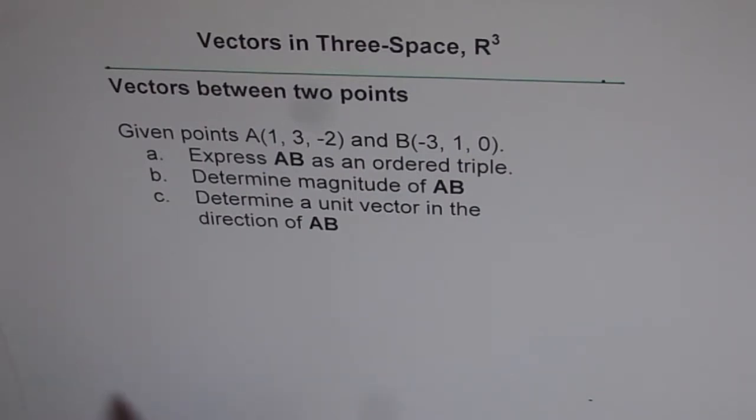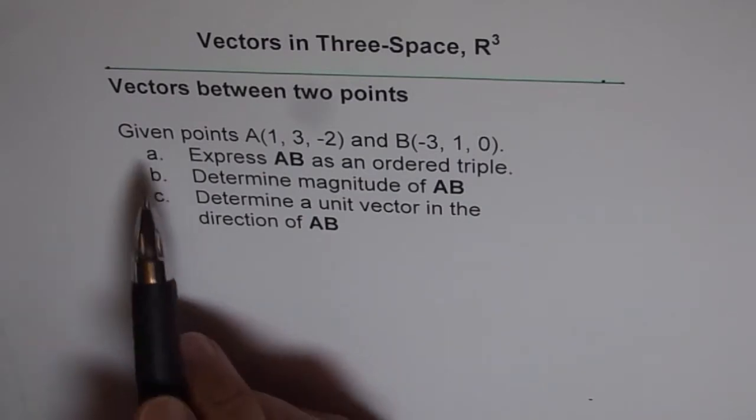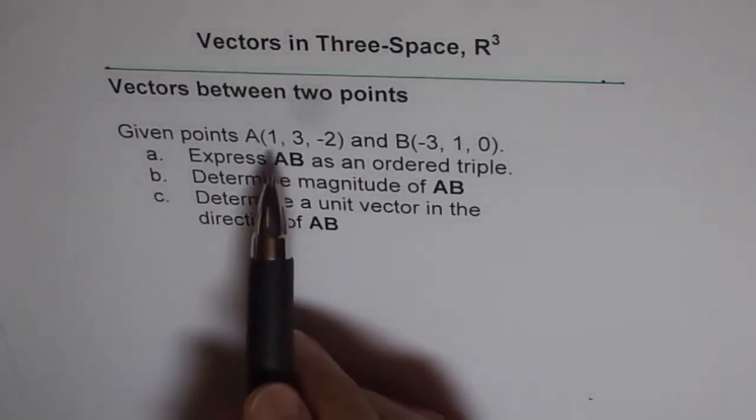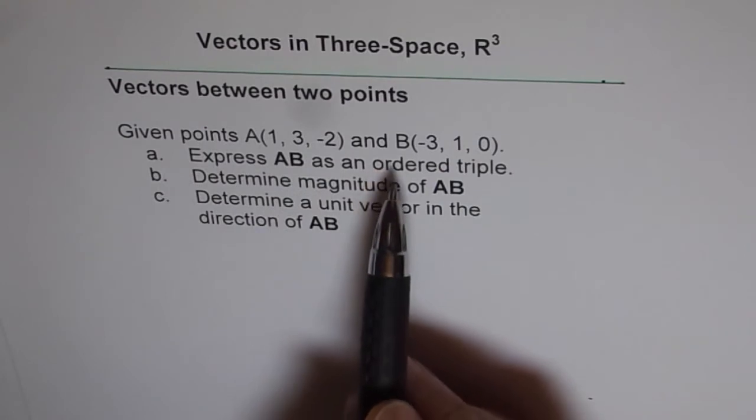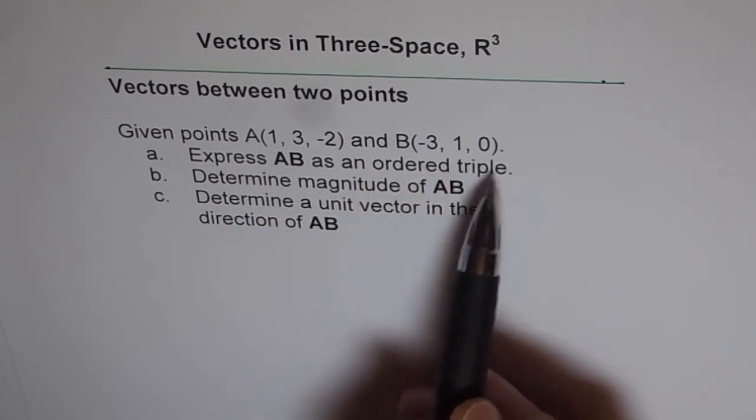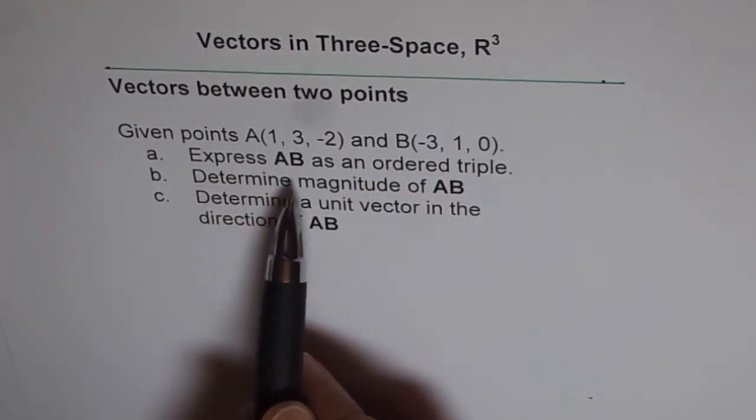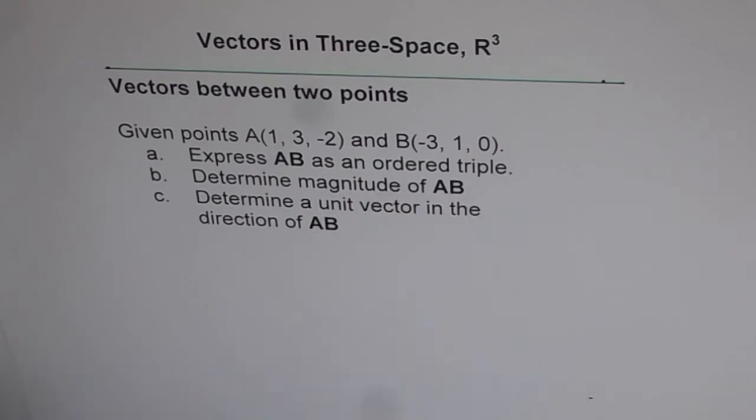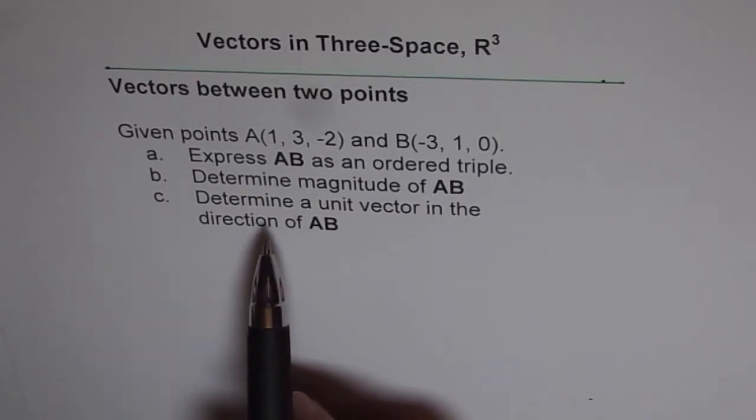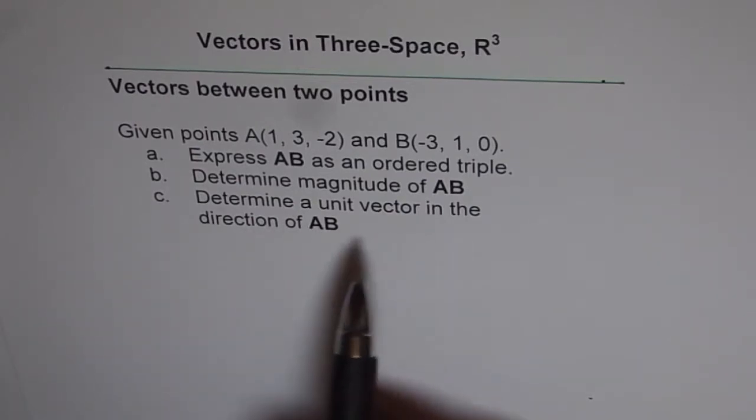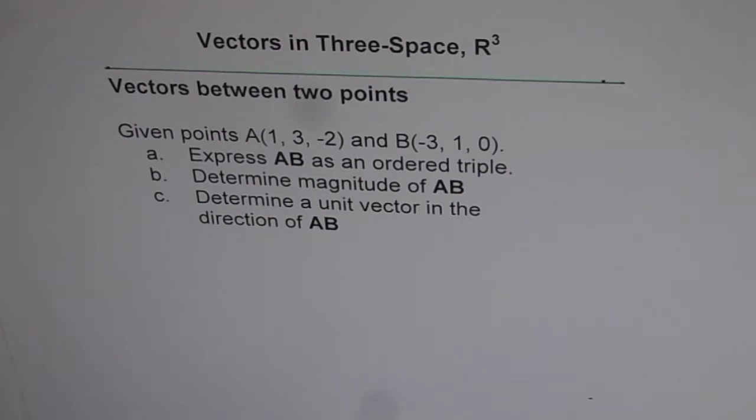And this question is related to that. Given points A(1, 3, -2) and B(-3, 1, 0): express AB as an ordered triple. Part B is determine magnitude of AB. And C is determine a unit vector in the direction of vector AB.